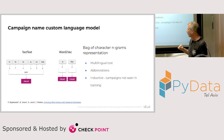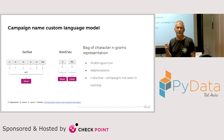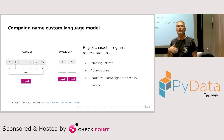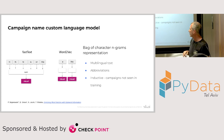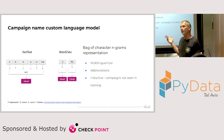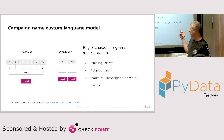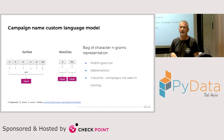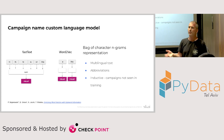FastText was a nice choice because its representation is character-based, using character n-grams. Each character in the training data is part of the vocabulary, as well as n-grams — typical combinations of characters. So we expect FastText to catch abbreviations and client-specific terms. The character-based approach also gives us multilingual support out of the box. It also provides inductiveness, so we can create vector representations for campaigns not seen during training — giving predictions even for newly created campaigns.